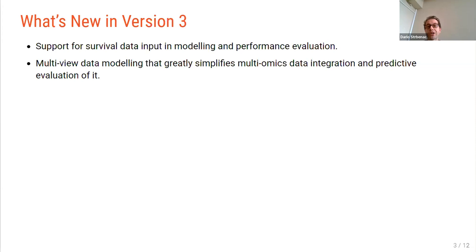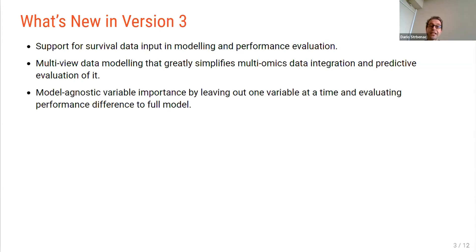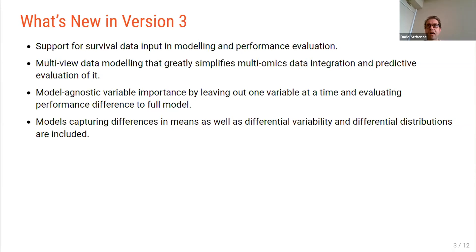But it's been overhauled so that all of the functions will work for survival data, which also includes censoring, of course. As you were hinted at before, there's multi-view data modeling that greatly simplifies multi-omics data integration and predictive evaluation of it. There's model agnostic variable importance, which works by leaving out one variable at a time and building a model and seeing how it performs. There's new models which we've also included, such as random survival forests and extreme gradient boosting. Both of those are new wrappers.